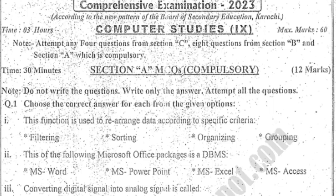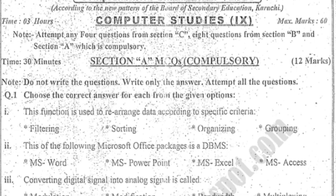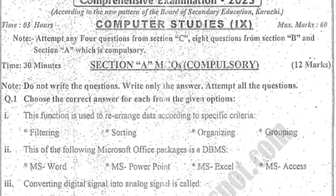Note: Attempt any 4 questions from Section C. From Section B, you have to do 4 questions. From Section A, you have to do 8 questions, which is compulsory — Section A is compulsory, you have to complete that.